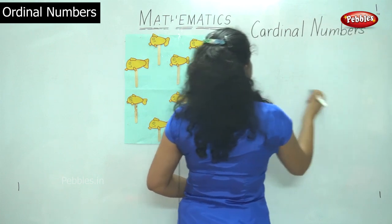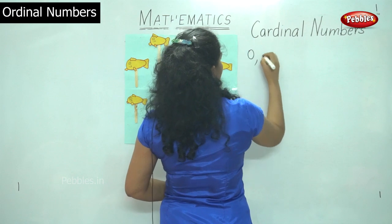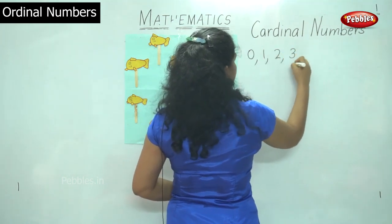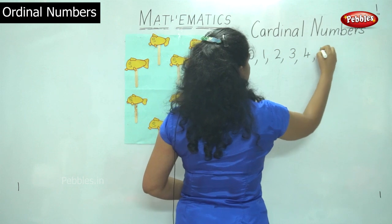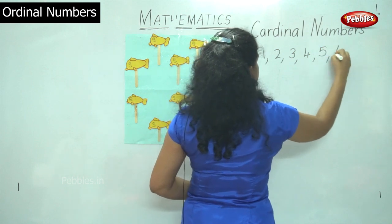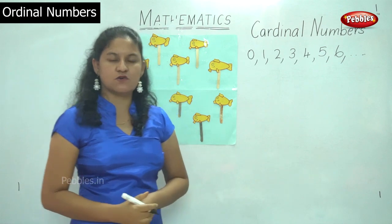So cardinal numbers are from 0, 1, 2, 3, 4, 5, 6 and so on. So these numbers go.